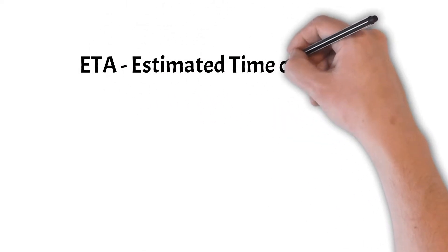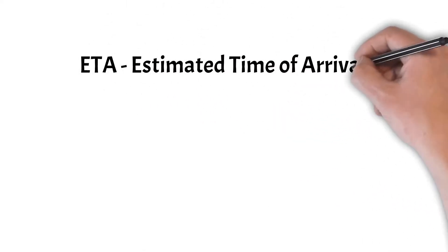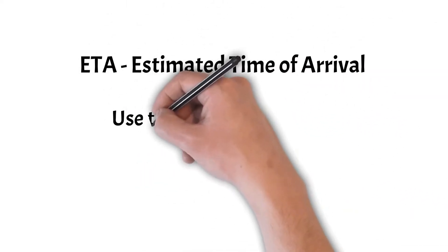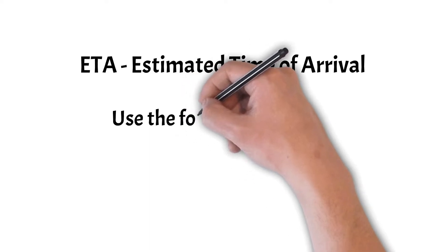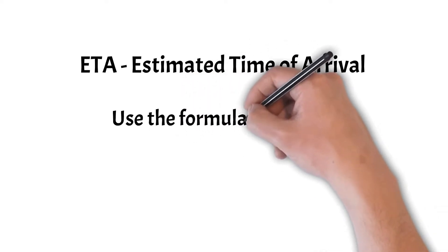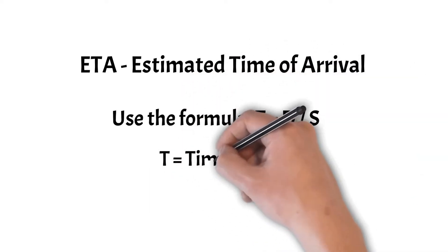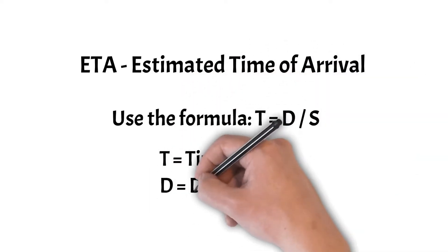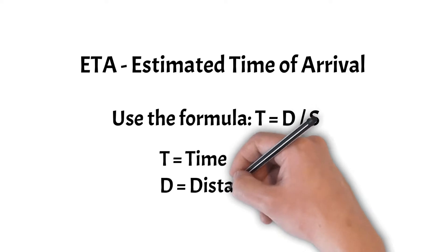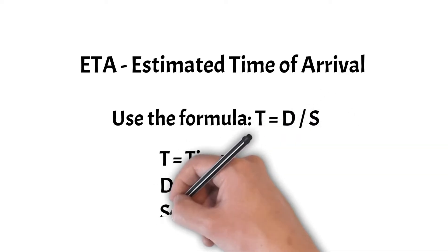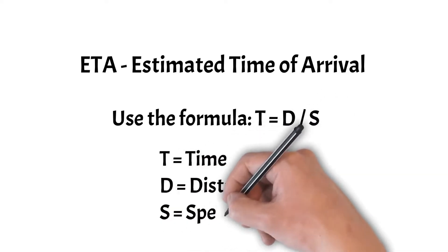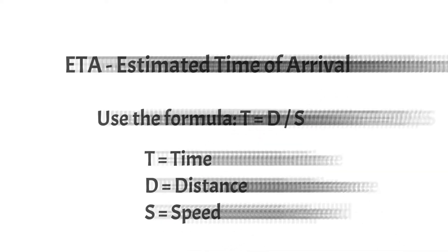ETA — Estimated Time of Arrival. Use the formula: time is equal to distance divided by speed, where t equals time, d equals distance, and s equals speed.